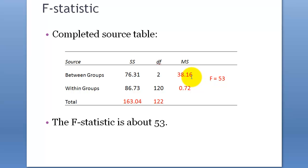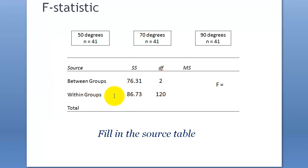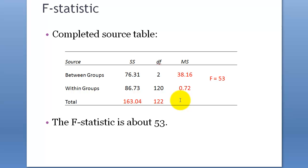Because between-group variance and within-group variance can be calculated using sum of squares — between-group sum of squares and between-group degrees of freedom — you can calculate the variance from those, and F using these two numbers, and the total is just the total of these numbers. So if we get all these values — between-group sum of squares, between-group degrees of freedom, within-group sum of squares, and within-group degrees of freedom — we can get all these numbers by simple calculations.